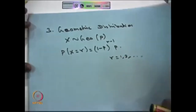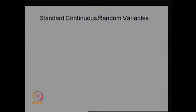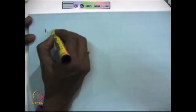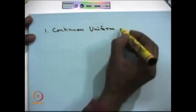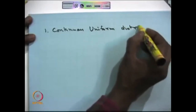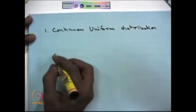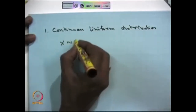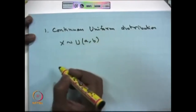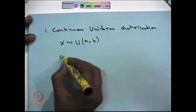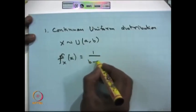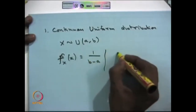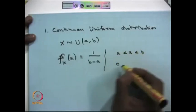Next we move into the continuous random variables. When we say the random variable X has a continuous uniform distribution over the interval a to b, the probability density function is 1/(b-a) within the interval a to b, and 0 otherwise.